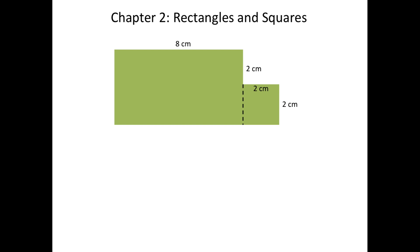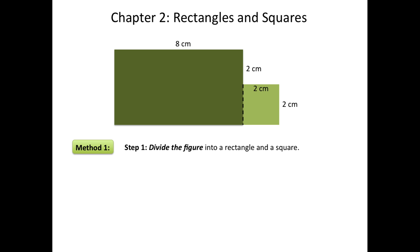Let's go over one method of how to solve this problem. In order to find the shaded area of this figure, we can begin by dividing the figure into a rectangle, as you can see here in dark green, and a square, as you can see here in light green. We'll be able to find the total shaded area of this figure by adding together the area of the rectangle and the area of the square. We know that to find the area of a rectangle or a square, we multiply the length times the width.